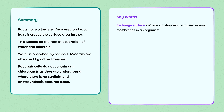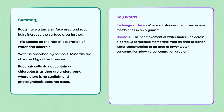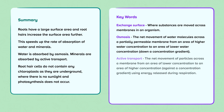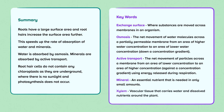Keywords. Exchange surface: where substances are moved across membranes in an organism. Osmosis: the net movement of water molecules across a partially permeable membrane from an area of higher water concentration to an area of lower water concentration, down a concentration gradient. Active transport: the net movement of particles across a membrane from an area of lower concentration to an area of higher concentration, against a concentration gradient, using energy released during respiration. Mineral: an essential nutrient that is needed in only small amounts. Xylem: vascular tissue that carries water and dissolved nutrients around the plant.